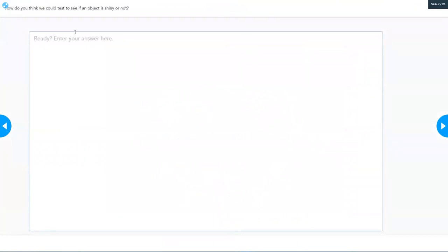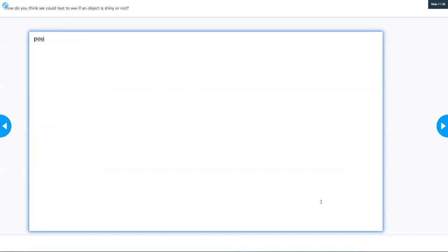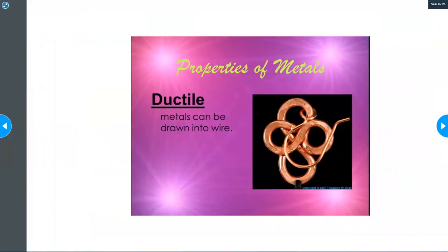So you're going to have an open-ended question here: how do you think we could test to see if an object is shiny or not? I want you to answer like if you had a piece of anything in front of you, how do you think, what would be the test we would use to see if it was shiny or not? And I want you to click on the box and type in your answer. And once you've typed something, there's going to be a submit button down here in the right somewhere, and you're going to hit submit. Make sure you submit your answer because I'll go back and look at them.